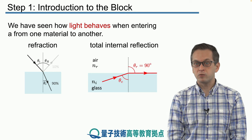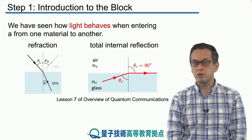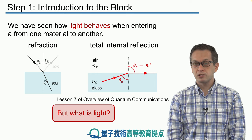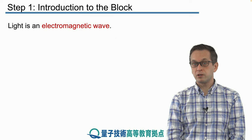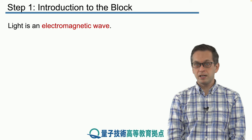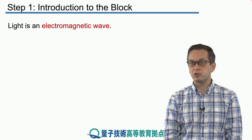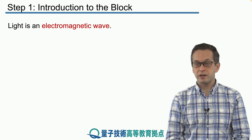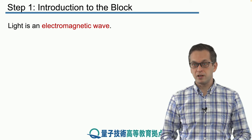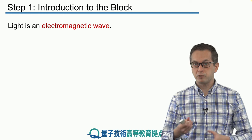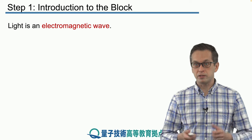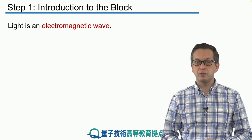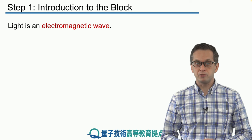In this lesson, we're going to explore what light is and how we describe it. To cut things short, we'll give you the answer right away: light is an electromagnetic wave. This is a very short sentence, but it's loaded with lots and lots of information. In the next three lessons, we're going to unpack all this information and then put it back together so that you understand why this is true.